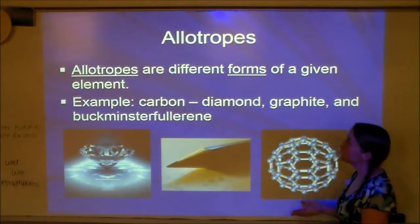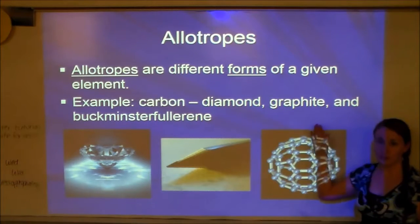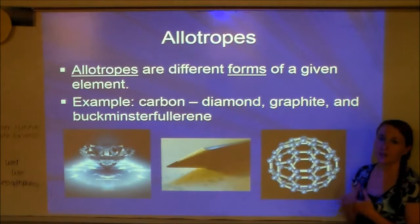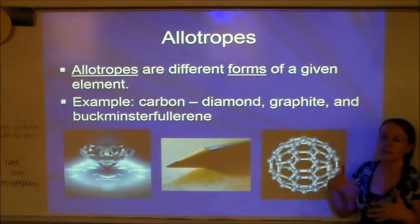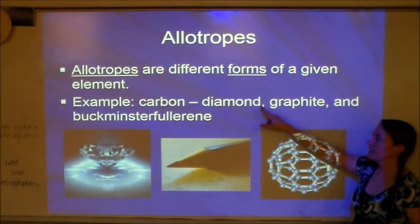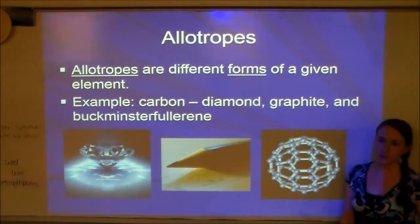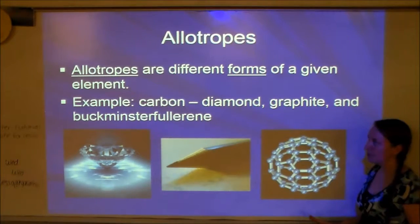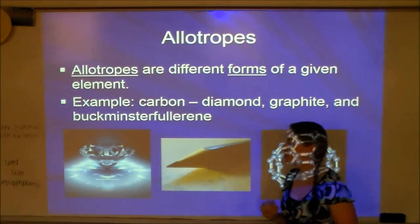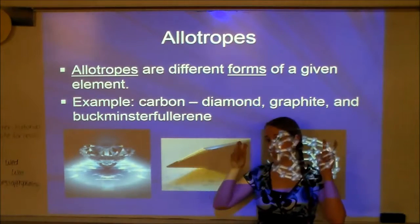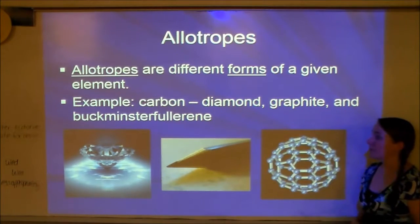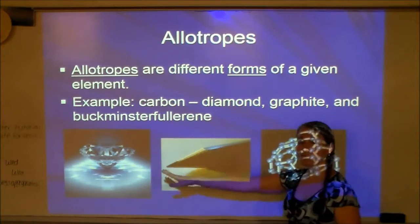Allotropes are different forms of a given element. It's the same element, but the atoms are bonded in a way that makes the actual look and feel of the substance different. A great example is carbon, which can exist as diamond, graphite, or Buckminster fullerene — shortened as buckyball. Graphite, by the way, is what's in your pencil lead — it's not actual lead, it's graphite.